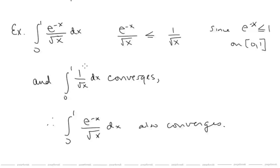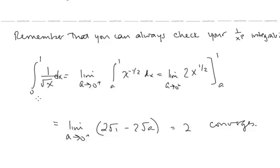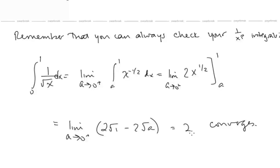Keep in mind that if you forget the rules for 1/x^p, you can always evaluate those integrals directly. For example, the integral from 0 to 1 of 1/√x: we pull off the discontinuity at 0 and write it as the limit as a → 0⁺ of the integral from a to 1 of x^(-1/2) dx. Integrating gives 2x^(1/2), and evaluating gives 2√1 − 2√a → 2 as a → 0, confirming it converges.